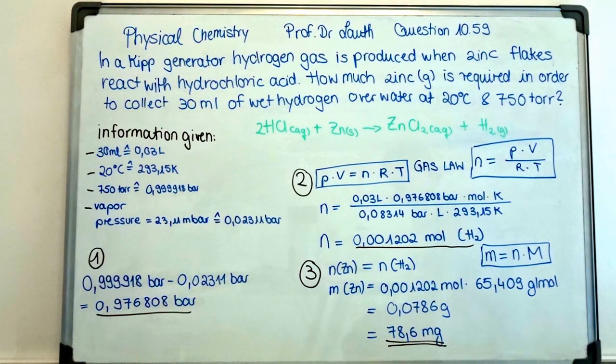a pressure of 750 Torr, which is equal to 0.999918 bar, and a water vapor pressure of 23.11 mbar, which is also equal to 0.02311 bar.